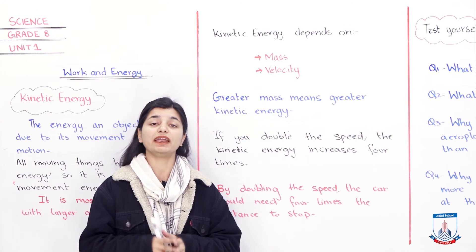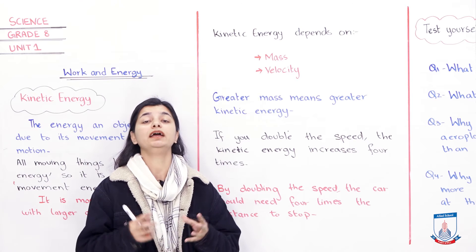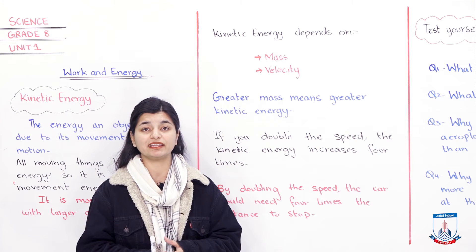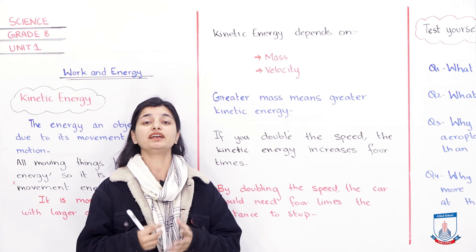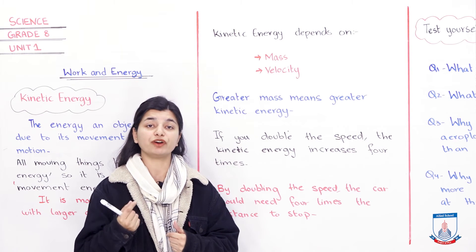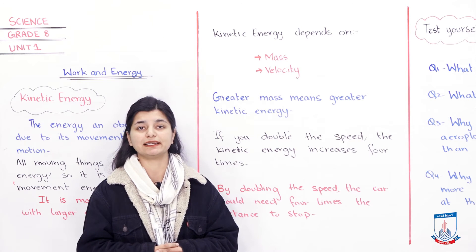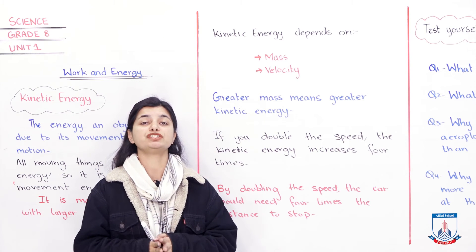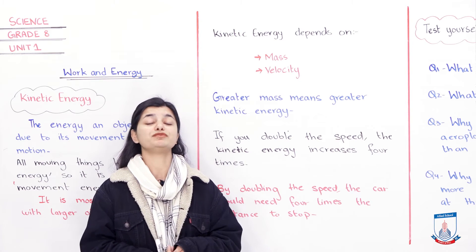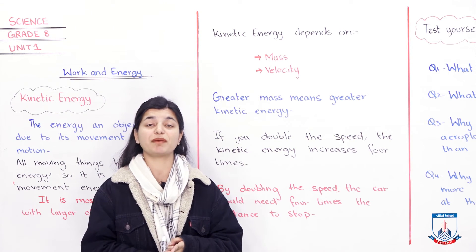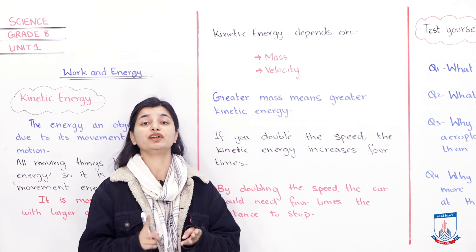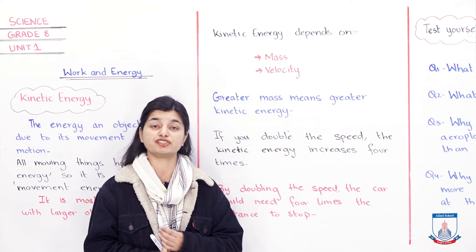In this sub-topic, we had to define and understand what kinetic energy is, what its purpose is, and what it depends on. In senior and future classes, you will also understand the formula for it, but we will not go into that right now because it is not covered in your book at this point. We define kinetic energy as the energy possessed by all moving objects, and we understand that it depends on mass and velocity — the greater the mass or the greater the speed, the higher the kinetic energy.